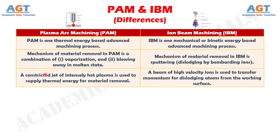Number 3: in plasma arc machining, a constricted jet of intensely hot plasma is used to supply thermal energy for material removal, whereas in iron beam machining, a beam of high velocity ions is used to transfer momentum for dislodging atoms from the working surface.